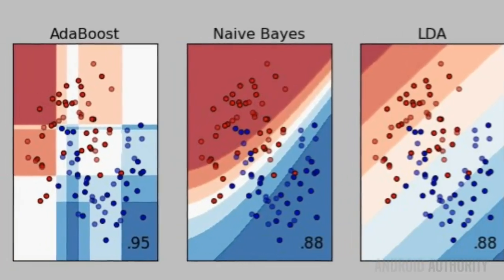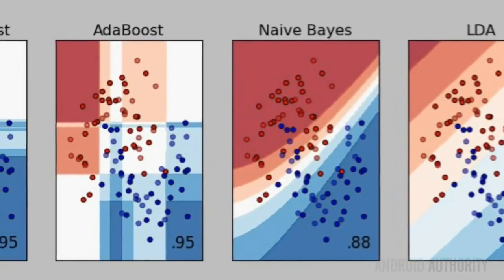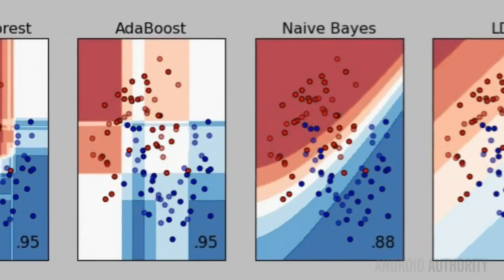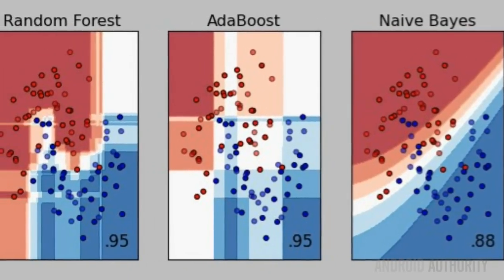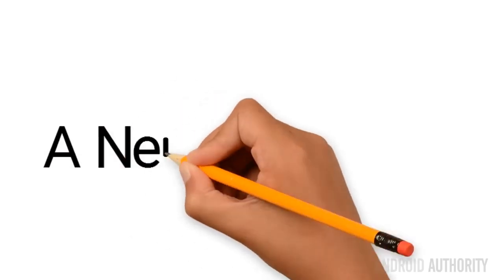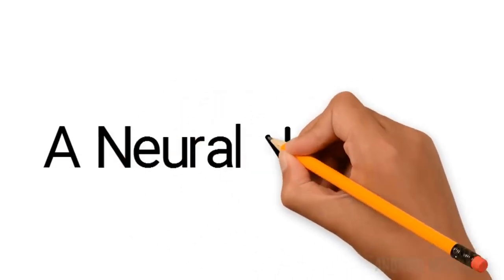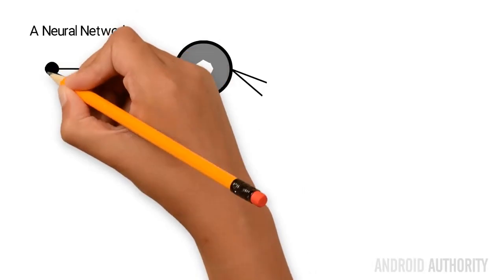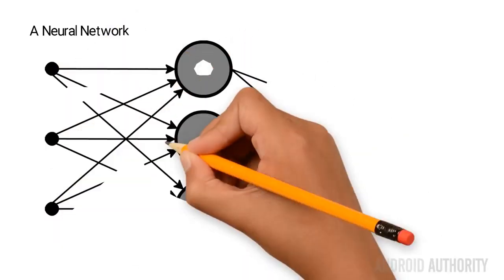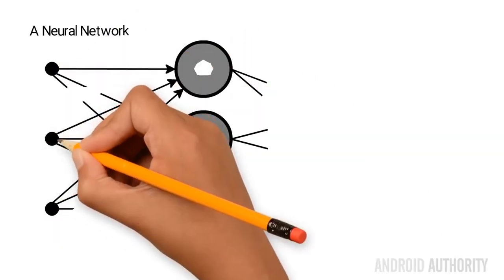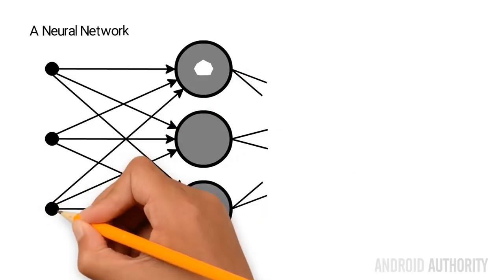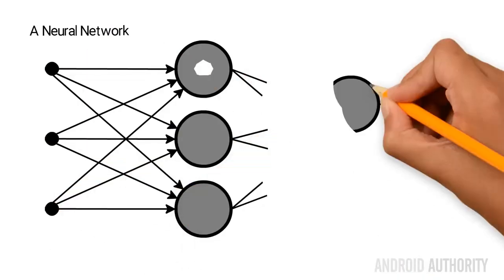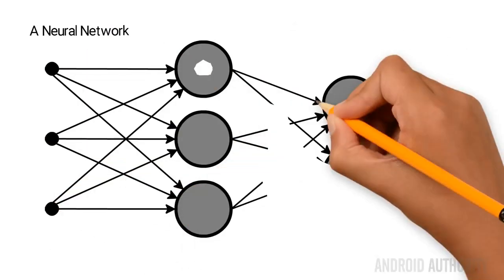The other images show different algorithms and how they attempt to categorize a new sample. If the new sample lands in a white area, it means it can't be classified using that method. The number on the lower right shows the classification accuracy. One of the buzzwords we hear from companies like Google and Facebook is neural net.